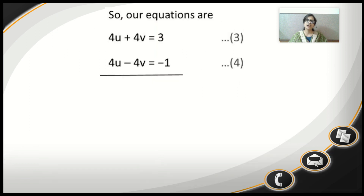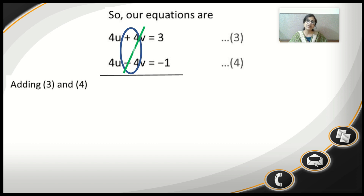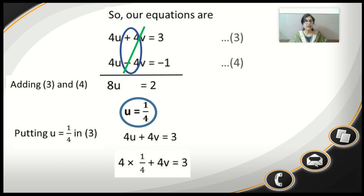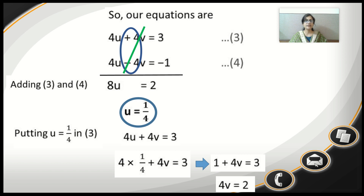Looking at equations 3 and 4 written one below the other, the coefficients of v are the same in magnitude but opposite in sign, so we solve by elimination. Adding equations 3 and 4 cancels the v terms, giving 8u equals 2, and therefore u equals 1 upon 4. Substituting u equals 1 upon 4 into equation 3: 4 times (1 upon 4) plus 4v equals 3. Cancelling gives 4v equals 2, so v equals 1 upon 2.